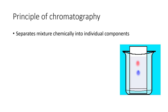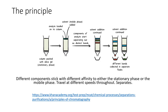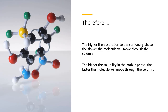The principles of chromatography are really important to understand how a generator works. Chromatography is a method where you use a fixed phase and a solvent to separate different components that are mixed together. The different components stick with different affinity to the stationary phase or dissolve into the solvent phase. It's about the lipophilicity, hydrophilicity, and the charge of the components. The higher the absorption onto the stationary phase, the slower the molecule will move through the column. The higher the solubility in the mobile phase, the faster the molecule will move.